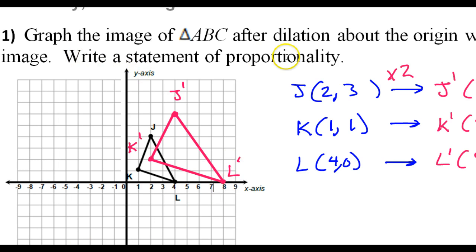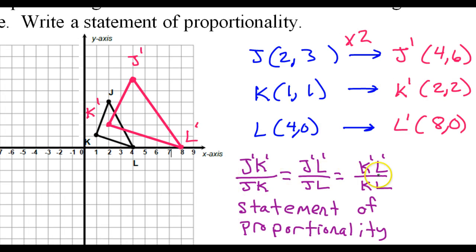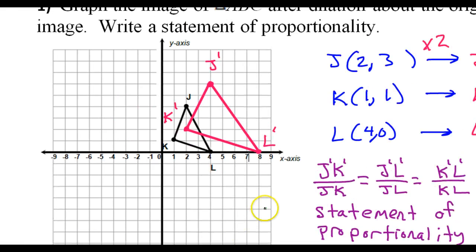Now we're supposed to write a statement of proportionality because these are similar figures. Statement of proportionality is just setting up a proportion by making fractions out of all the corresponding sides. So this is what is meant by a statement of proportionality. And of course all of these are equal to 2 because that's the scale factor. So that was problem number 1.